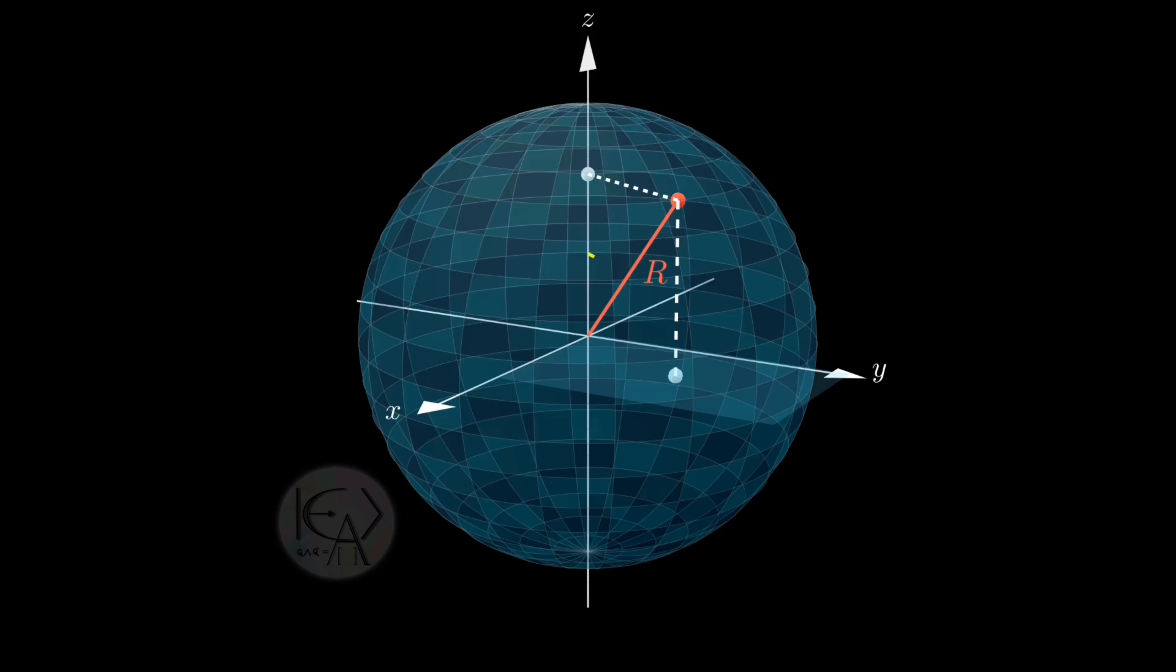Now we can define some of the angles thus formed. The angle from the z-axis down to the radial line joining P is theta, which is also called the radial angle. And the horizontal projection helps define the azimuthal angle phi, which is measured from the x-axis.